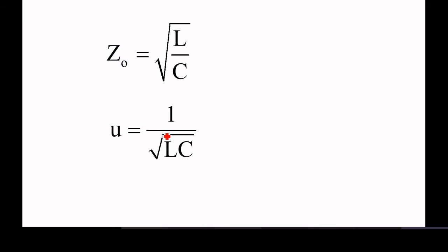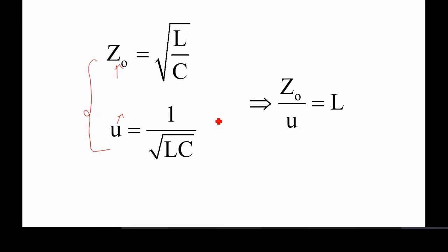We will go for the next value. Z₀ is given as root L by C, and the velocity with which the wave is traveling is given as U equals 1 by root LC. For a distortionless line, these are the two equations — characteristic impedance is root L by C and velocity is 1 by square root of LC. We will use these two equations because characteristic impedance and velocity are both given. If we take the ratio between these two, we can find L or C.